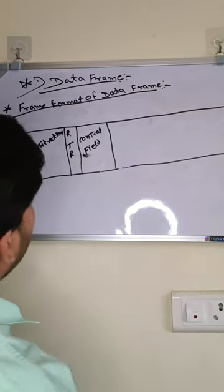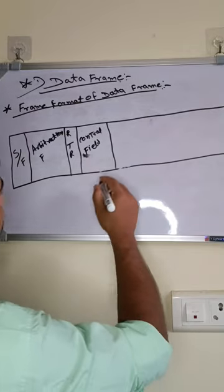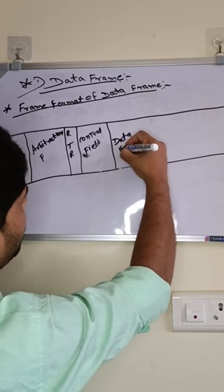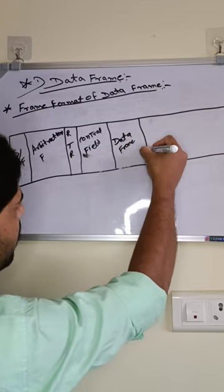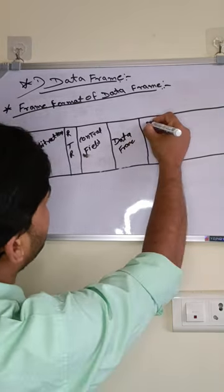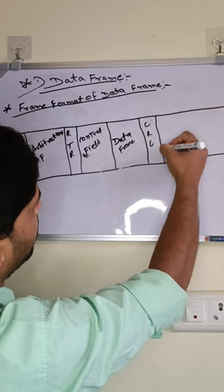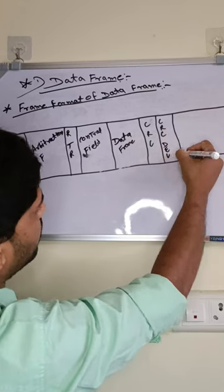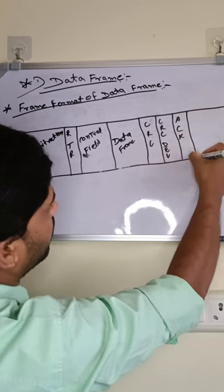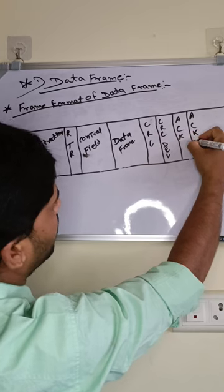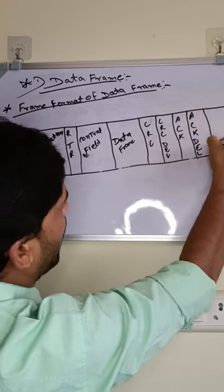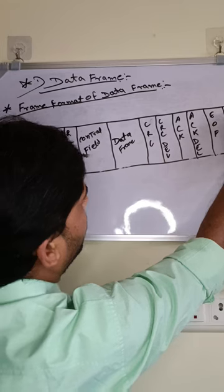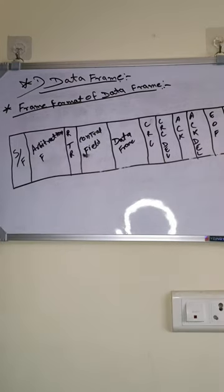Start of Frame takes 1 bit. Arbitration Field takes 11 or 29 bits — 11 bits for standard and 29 bits for extended. RTR takes 1 bit. Control Field takes 6 bits. Data Field takes 8 bytes (64 bits). CRC takes 15 bits. CRC Delimiter takes 1 bit. Acknowledgement takes 2 bits. Acknowledgement Delimiter takes 1 bit. End of Frame takes 7 bits. IFS (Inter-Frame Space) takes 3 bits.